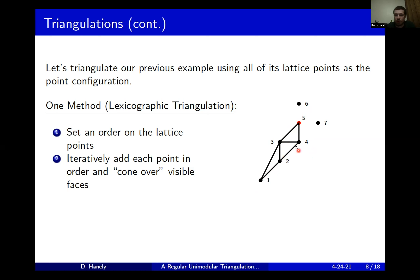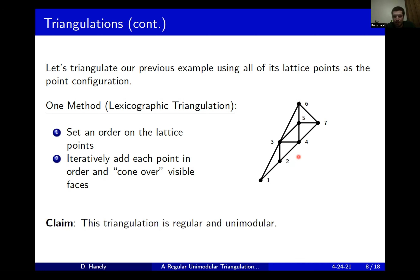Continuing: when we move to five, we do the cone-over operation and three-four is visible. When we move to six, three-five is visible. When we move to seven, four, five, and six are all visible, so we obtain this triangulation. At this point, all points have been added and all cone-overs are done. This triangulation is both regular and unimodular. To see unimodularity, the width and height of each triangle are all one, so the Euclidean volume is one-half, and multiplying by two factorial gives normalized volume one for each triangle. Regularity comes for free because lexicographic triangulations always yield regular triangulations.